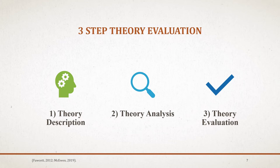In the McEwen book, there's a three-step theory evaluation. You are going to notice that there is anywhere from one to three steps. For the purpose of this lecture, we're going to focus on McEllis 2012 and Moody 1990's three-step theory, which is theory description, theory analysis, and theory evaluation.